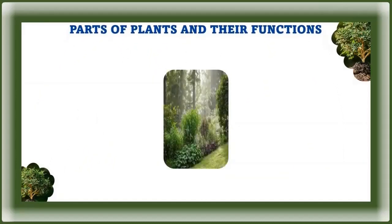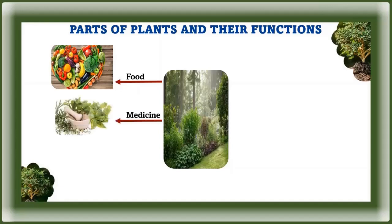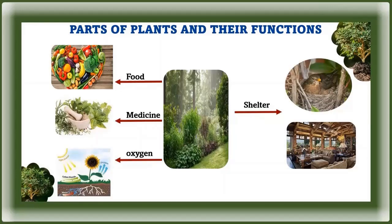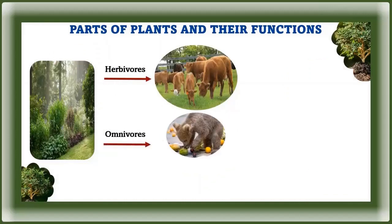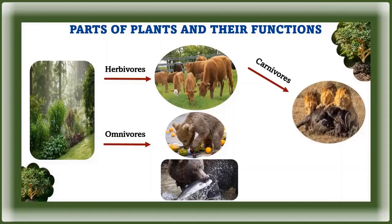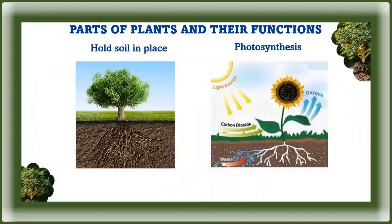Plants are extremely important to life on earth. Plants provide food, medicine, shelter, and the oxygen we need to breathe. In fact, everything we eat comes directly or indirectly from plants. Herbivores and omnivores depend on plants for survival. Even carnivores depend on plants because they often prey on animals that eat plants. Plants also provide shelter and habitats for many animals, and help to slow erosion because their roots hold soil in place.